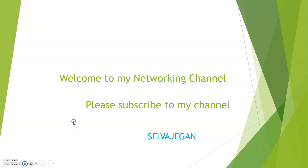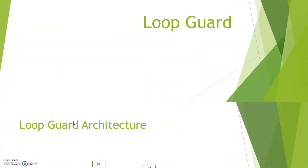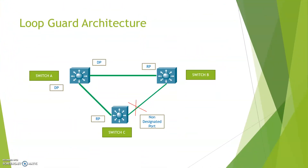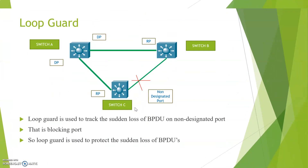Today the topic I am going to discuss is Loop Guard. Before that, let us understand the spanning tree architecture. Here I have connected Switch A, Switch B, and Switch C — all connected via trunk links. Switch A is the root bridge, so its corresponding ports are always designated ports. A segment will have one designated port and one root port, and this is a non-designated or blocking port.